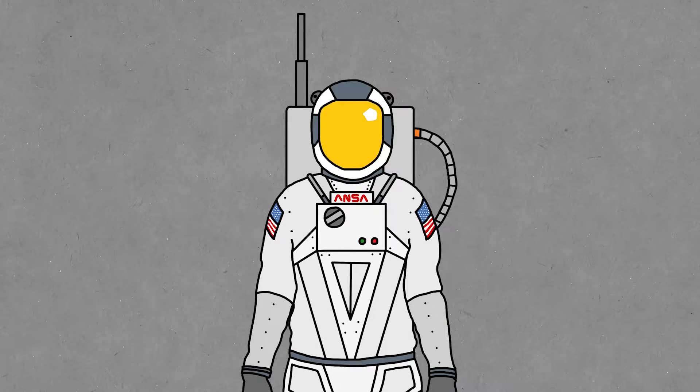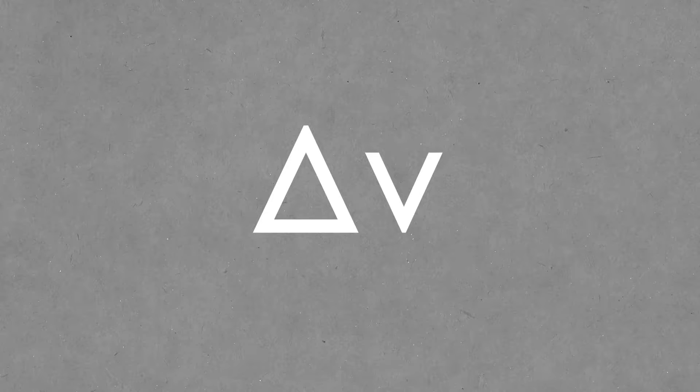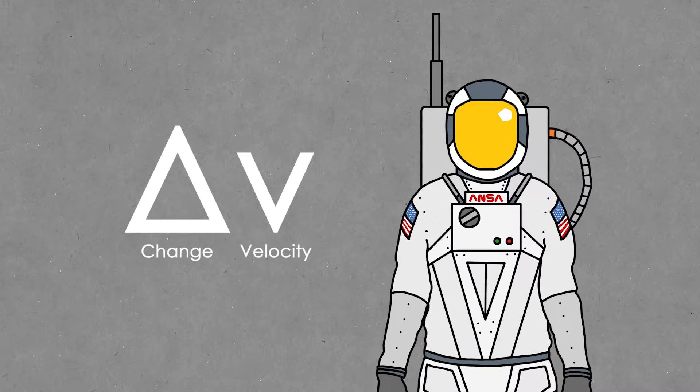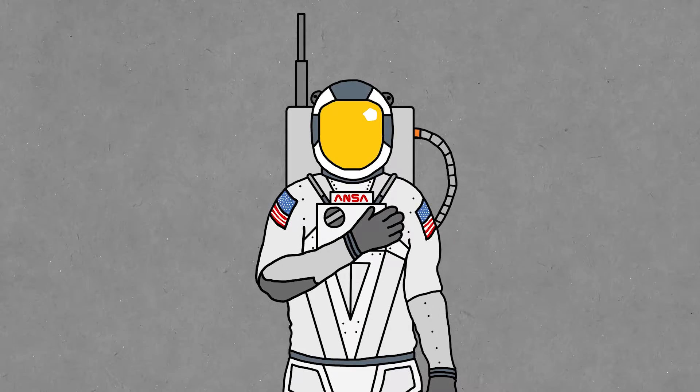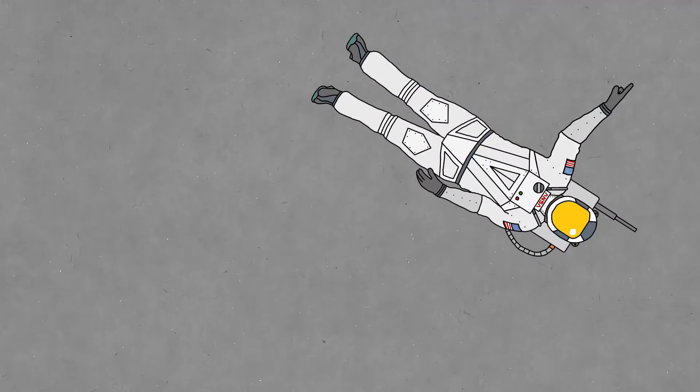So we have our targets, which means we can calculate the delta-v we need. The Greek letter delta stands for change, and v is velocity. So delta-v is a measure of how much we can change our velocity, which is super important for orbital maneuvering. If you want to know more about orbits, I've done a couple of videos that you might be interested in.